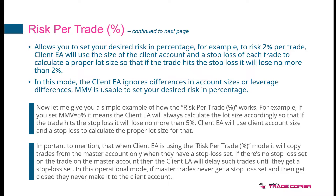This is very important to understand, because some people choose this money management mode and then come to customer support saying Client TA doesn't copy the trades. But the trade must have a stop loss — if there is no stop loss, it's impossible to calculate the risk per trade of 5%, because without knowing the stop loss — whether it's 50 pips, 10 pips, or whatever — we can't fill in the formula, do the calculations, and get the lot size. Without a stop loss, it's just not possible.